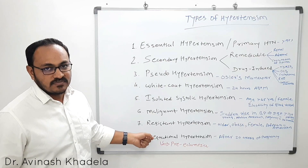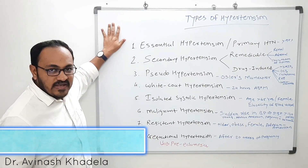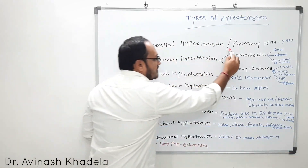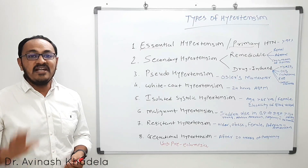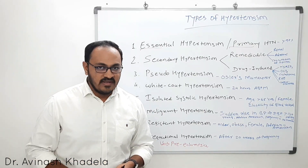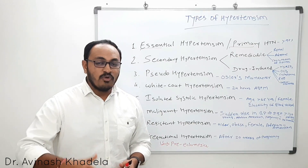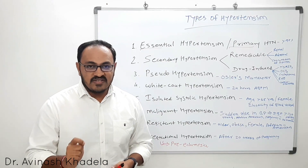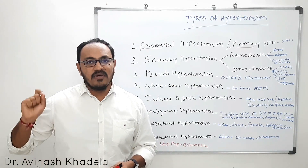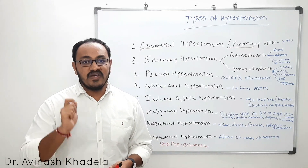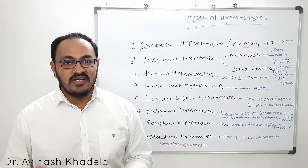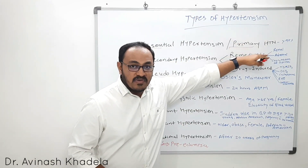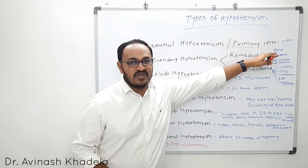We start with the first type: essential or primary hypertension. This comprises more than 90% of all diagnosed hypertension. Among patients diagnosed with hypertension, more than 90% will have primary or essential hypertension. This hypertension doesn't have any identifiable cause — the cause is yet to be found, it is unknown, and that is why it is known as primary hypertension.